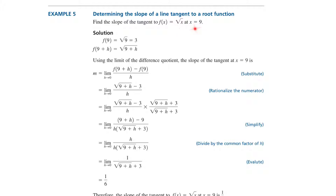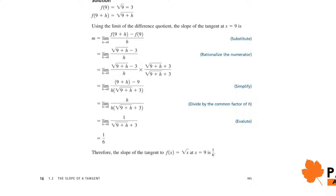The last example finds the slope of the tangent line to f(x) equals square root of x at x equals 9. We find f(9) and f(9+h), form the difference quotient, and rationalize the numerator to simplify. The slope becomes the limit of 1 over (square root of (9+h) plus 3) as h approaches 0. When h approaches 0, square root of (9+h) approaches 3, giving a limit of 1 over 6. Therefore, the slope of the tangent line is 1/6, and the equation of the tangent line is y minus 3 equals (1/6)(x minus 9), which can be rewritten in standard form.